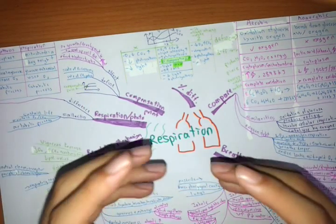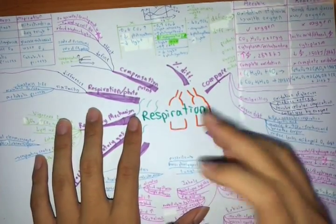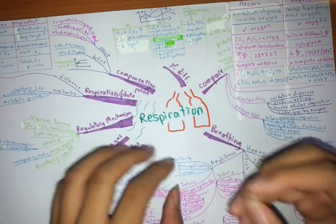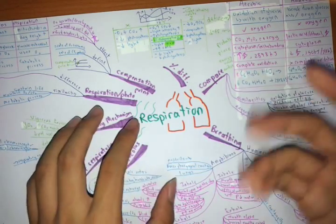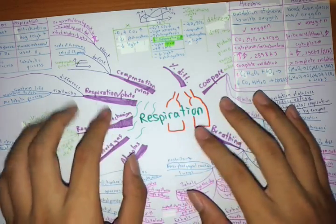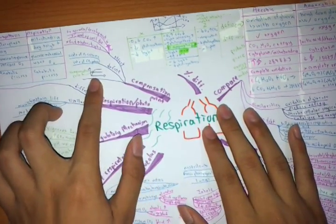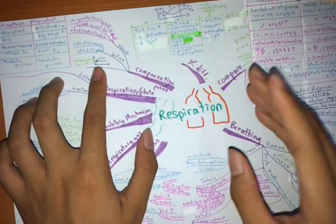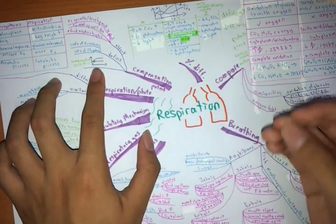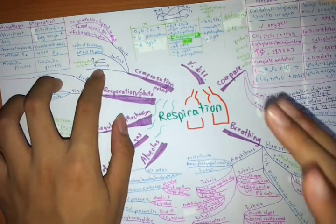The plant is just supplying all that it needs, so there are no extra resources being produced. When this is happening, we call this the compensation point — that light intensity where the plant just produces and consumes everything that it needs. That is what we call compensation point.